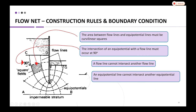The construction of the flow net must follow rules and boundary conditions. The most important condition is that the area between flow lines and equipotential lines must be curvilinear squares. When you have this complete set of flow lines and equipotential lines, it should produce shapes in curvilinear squares, as you can see here.